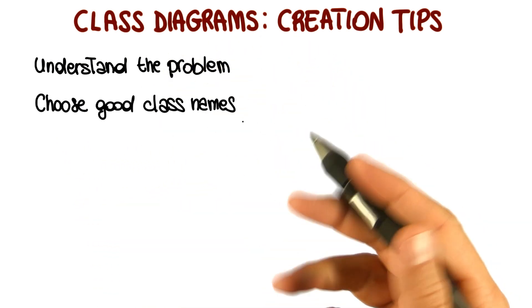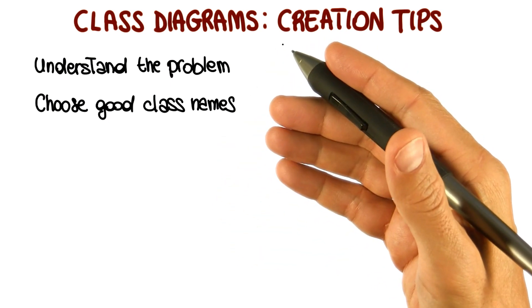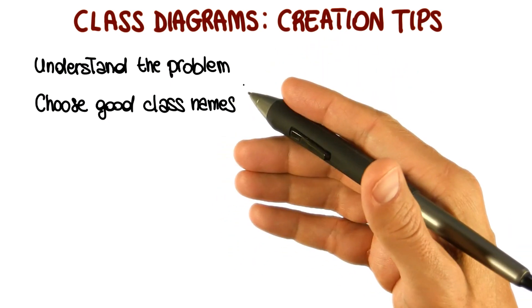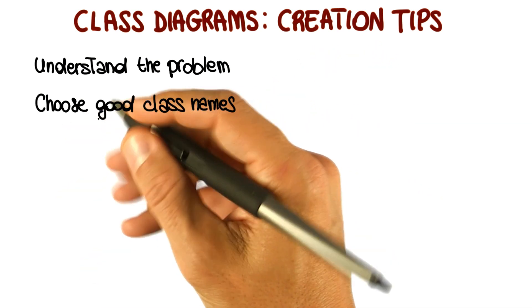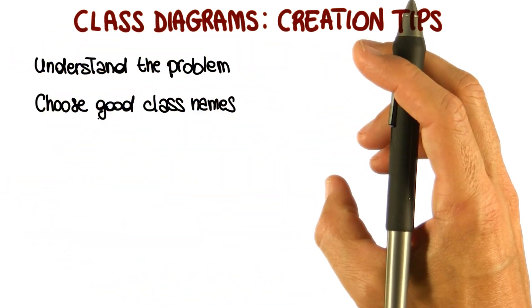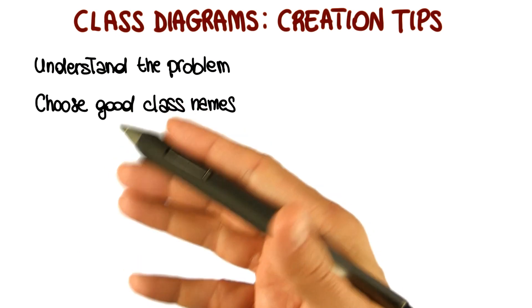This one might seem trivial, but it's very important to choose good class names. Why? Because class names communicate the intent of the class and clarify what the class refers to. So having good class names makes it easier to create a mapping between the real world object and the entities in your model. And of course it also makes it easier to understand the system after the system is built.